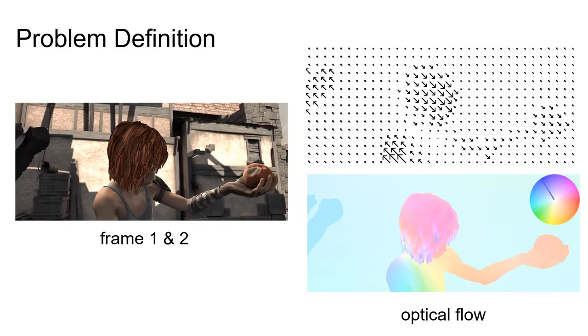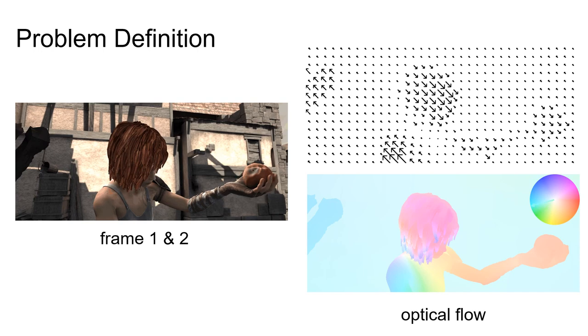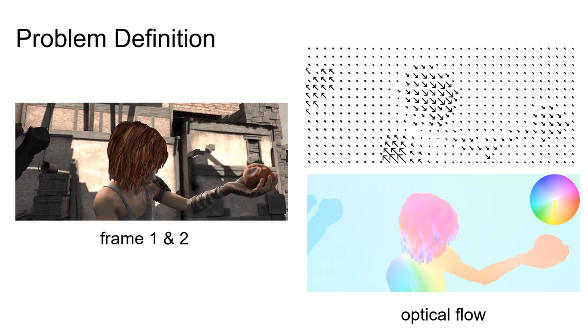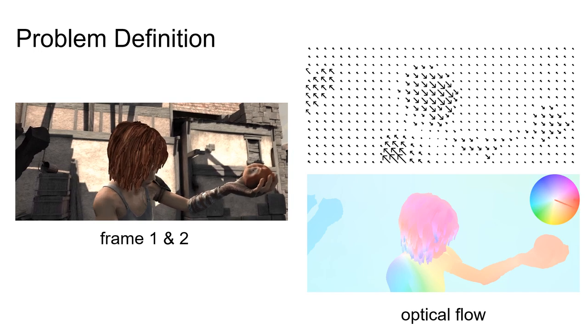Optical Flow represents the apparent motion between two video frames. It's commonly visualized as an RGB image using the color coding shown in the upper right corner, where the color denotes the flow direction and intensity denotes the flow magnitude.